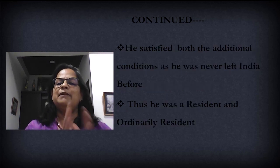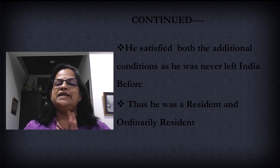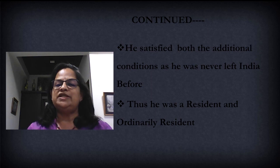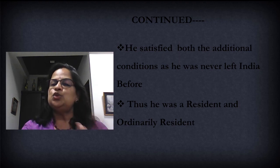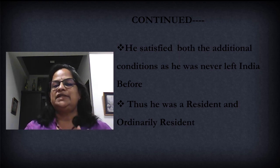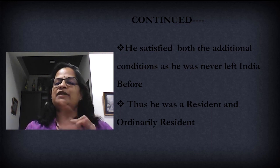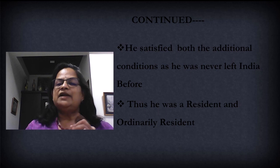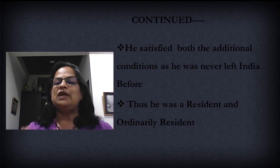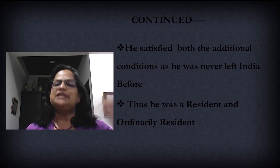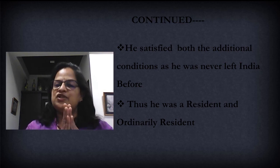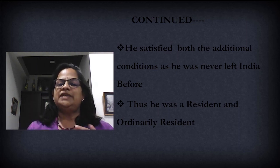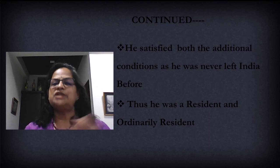Now we check additional conditions. The question says he left the country for the first time in 2018, meaning if you take 10 preceding previous years, he was a resident in 2 out of 10 immediately preceding previous years — first additional condition satisfied. The second condition — 730 days or more in India — you don't have to calculate. Since he left in 2018, all other years he was there, so the second additional condition is also satisfied.